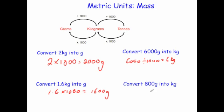Convert 800 grams into kilograms. To convert from grams to kilograms, you divide by a thousand. So you do 800 divided by 1,000. And 800 divided by 1,000 would be 0.8 kilograms.